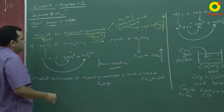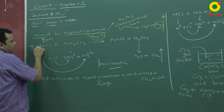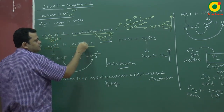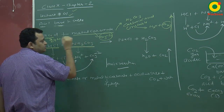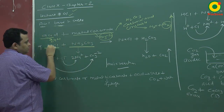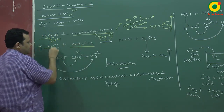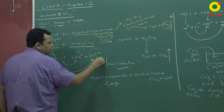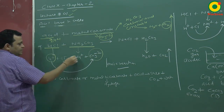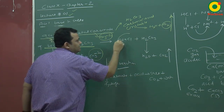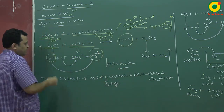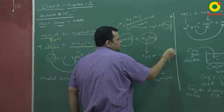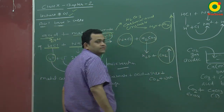Taking an example: hydrochloric acid reacts with sodium carbonate (Na2CO3). HCl gives H+ and sodium carbonate gives the carbonate ion. Na+ and Cl− combine to form NaCl salt, while H+ and CO3²− form H2CO3, which dissociates to give CO2 gas and water.